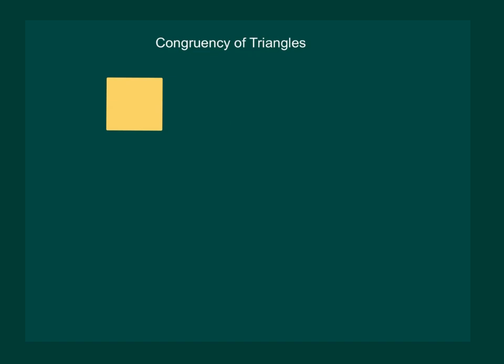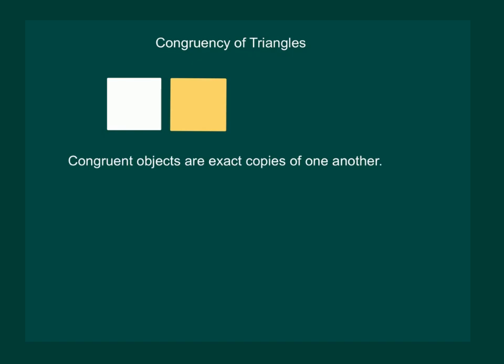Now, since one stamp covers the other completely and exactly, this means that the two stamps are of the same size and same shape. Hence, such objects are said to be congruent. We can say that white and yellow stamp are congruent to each other, and congruent objects are exact copies of one another.